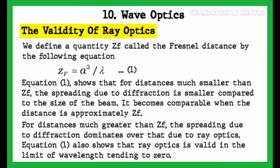It becomes comparable when the distance is approximately Zf. For distances much greater than Zf, the spreading due to diffraction dominates over that due to ray optics.